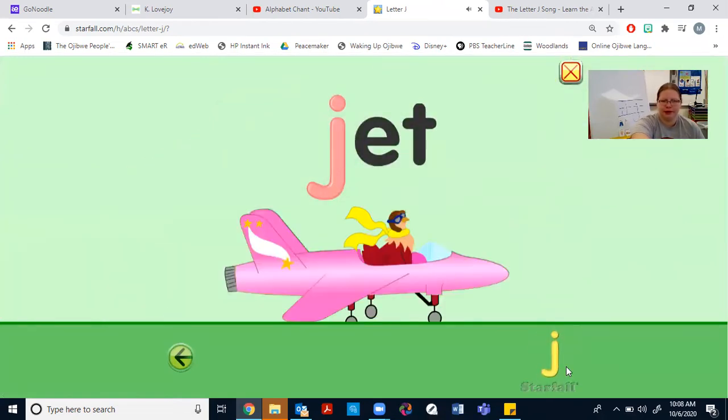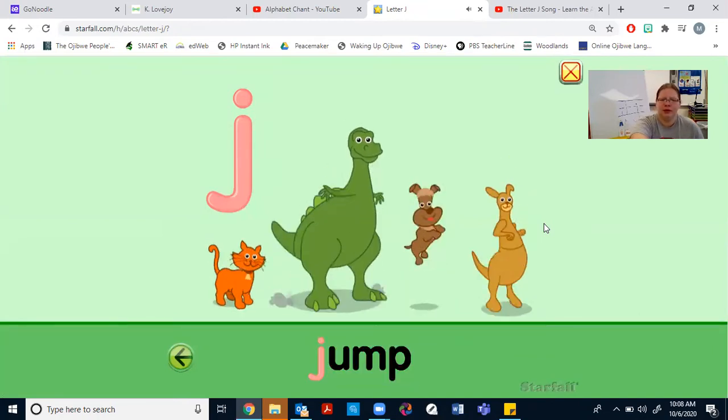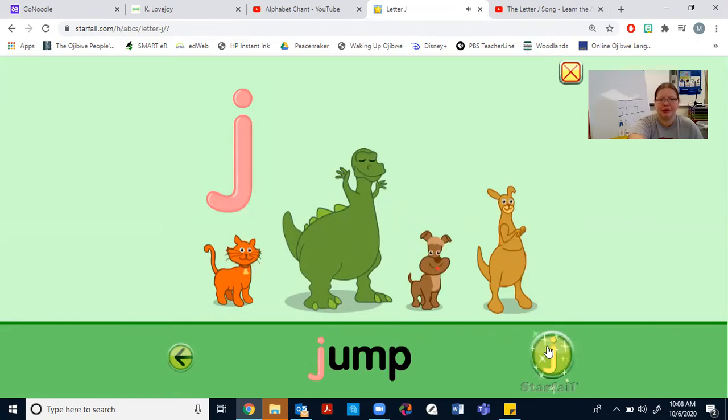Juh. What on this picture might begin with Juh? There's cat? No. Dinosaur? Juh. Duh. Dinosaur. No. Dog. Hmm. No, that begins with Duh. Kangaroo. Hmm. Kangaroo doesn't begin with Juh. I wonder what on this page begins with the Juh sound. Let's find out. Jump. Oh, they are jumping. That's a J word.